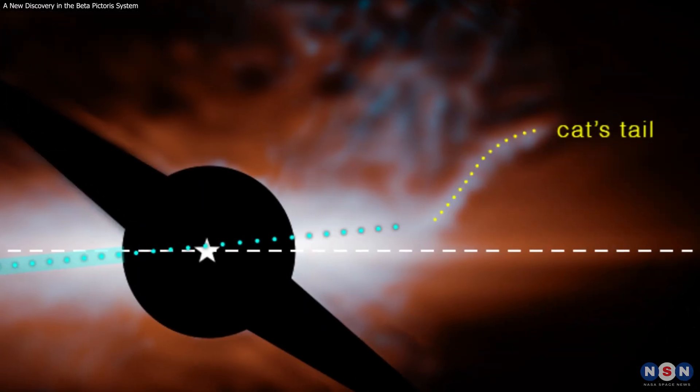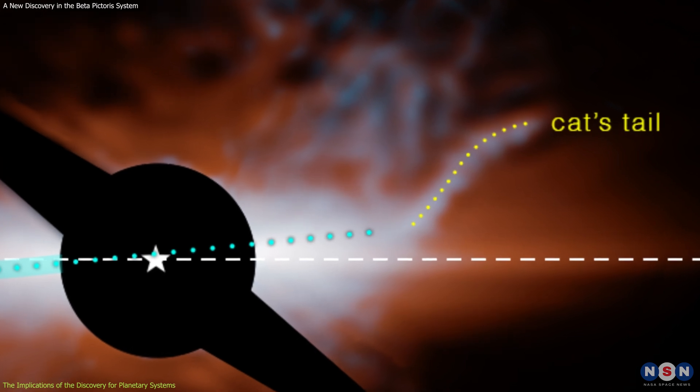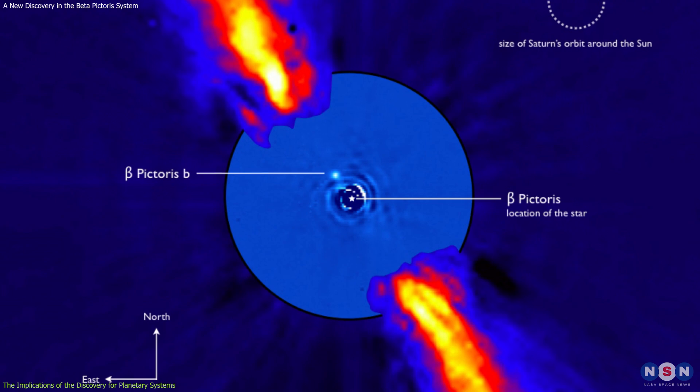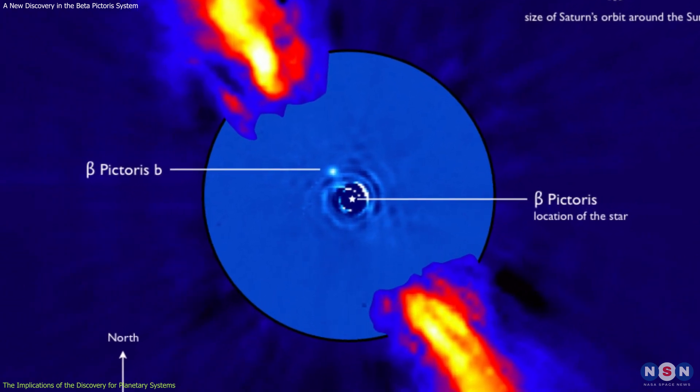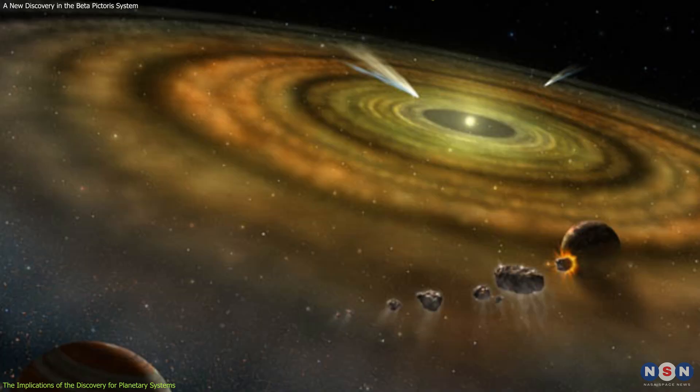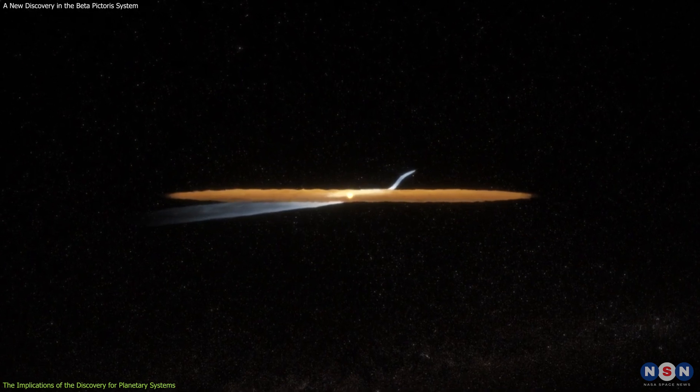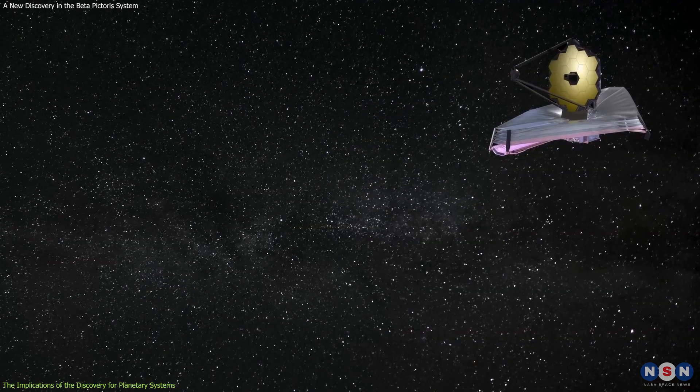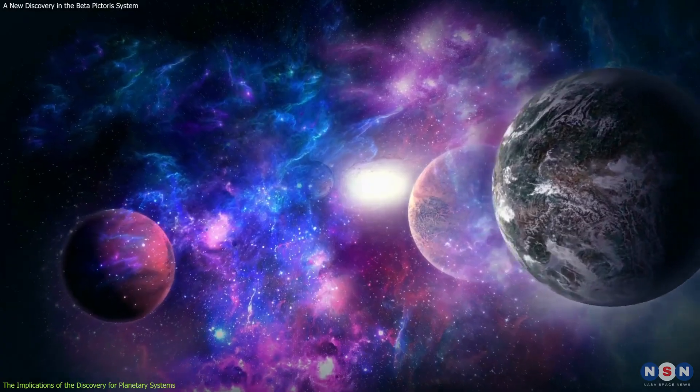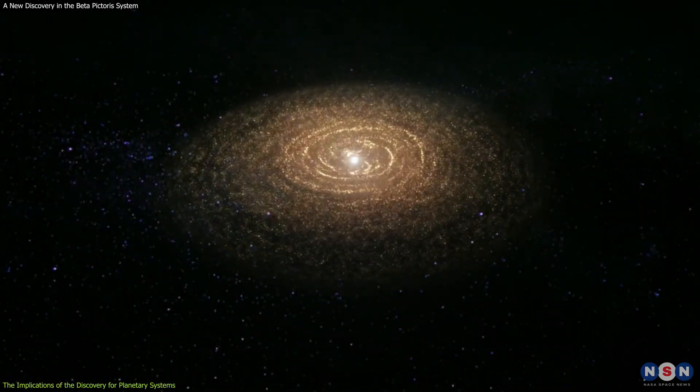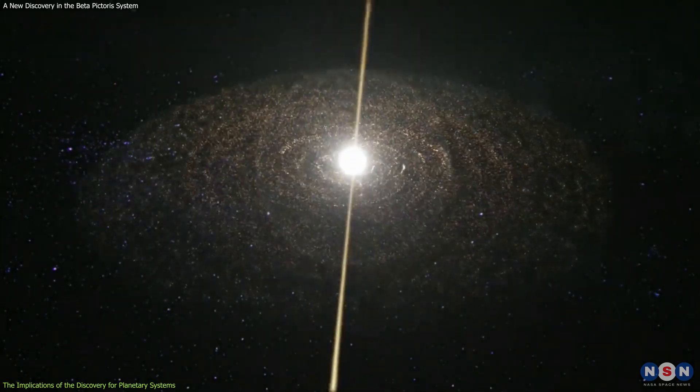The discovery of the cat's tail is a significant achievement for Webb, and for the field of astronomy. It shows that the Beta Pictoris system is a complex and dynamic system, where planets, dust, and gas interact in various ways, creating structures and phenomena that we have never seen before. It also shows that Webb is a powerful tool for exploring the diversity and evolution of planetary systems, and for finding clues about how our own solar system formed and changed over time.